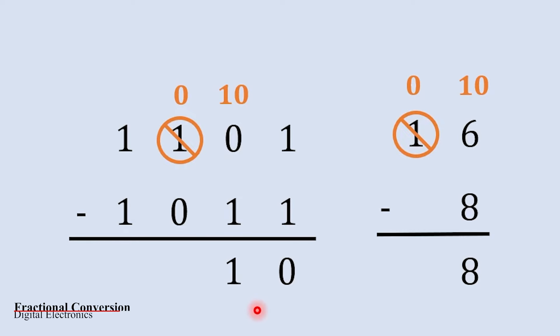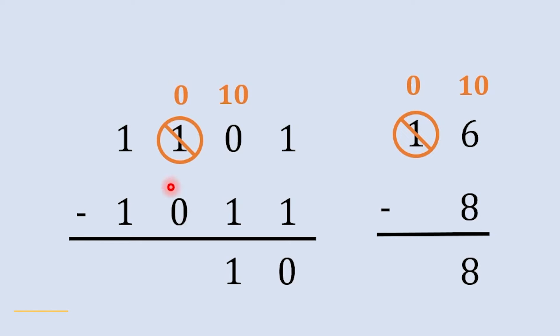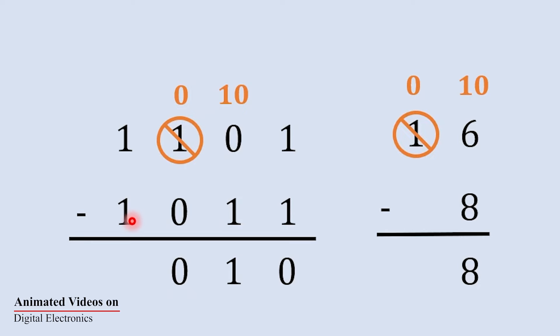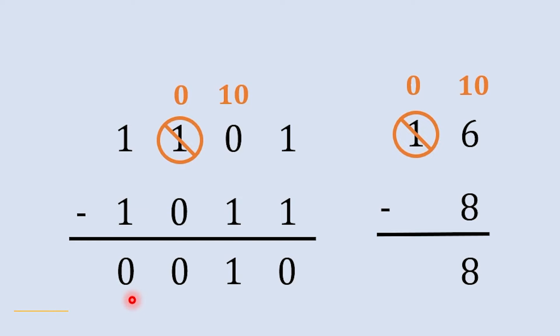Moving to the next column: zero minus zero is zero. Then one minus one is zero. This completes the first example — a straightforward binary subtraction using borrowing.